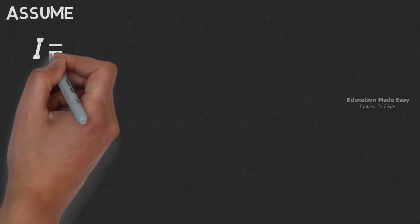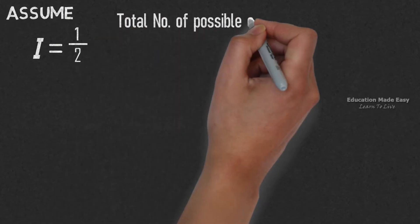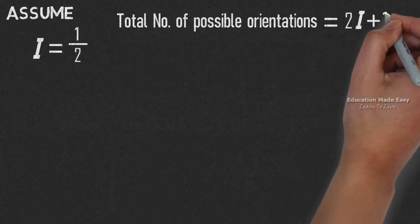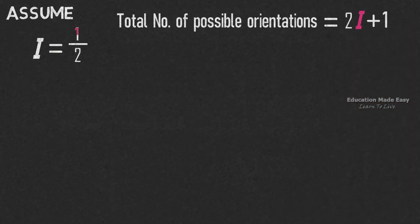Here, let us assume the value of I equal to 1/2. Let us write the equation for total number of possible orientations equal to 2I plus 1, where the value of I is assumed as 1/2.